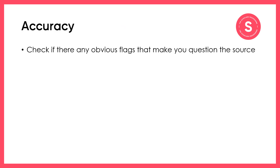Let's first talk about accuracy. To assess whether a source is accurate it's first important to think about what you already know about the topic, to check if there are any obvious flags that make you question the source. For example, if you see a poster saying World War 2 ended in 1948 but you know it ended in 1945, then you'll know that the source is not very accurate and therefore not very reliable.